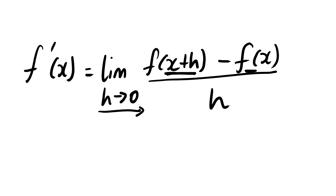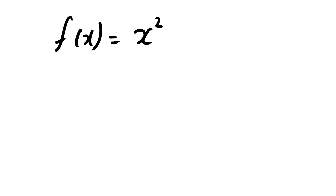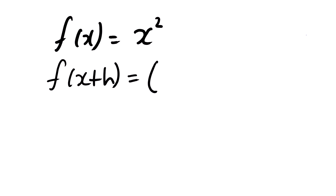Let us look at practical examples. Suppose we are given f of x as x squared and we want to find the derivative of this function using the first principle. Before we substitute into the equation, I first find f of x plus h — so where I see x, I substitute x plus h. So we have x plus h, squared.